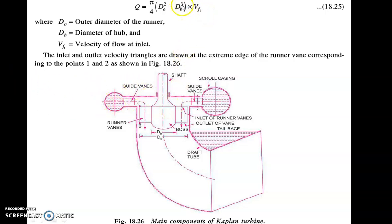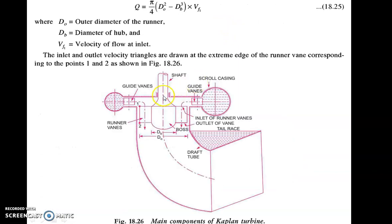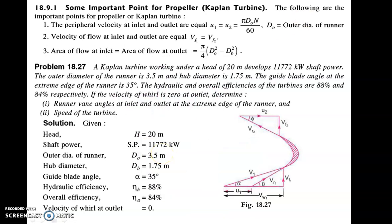Here do is outer diameter of runner, db is the inner diameter of the hub, and Vf is the velocity of flow. Here also Vf1 is generally equal to Vf2 for the Kaplan turbine, because points 1 and 2 are at the same distance from the center of the shaft, so diameter is the same.